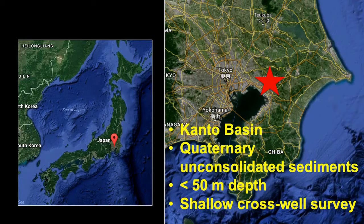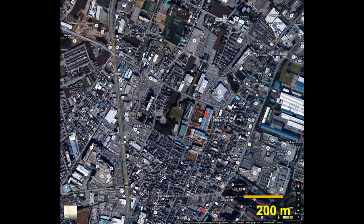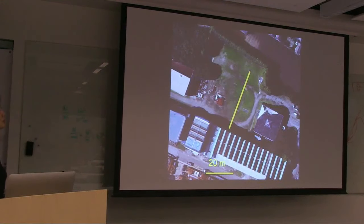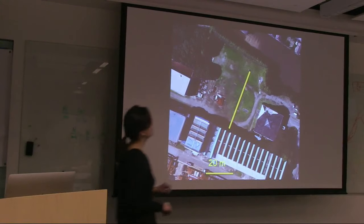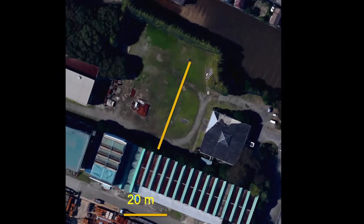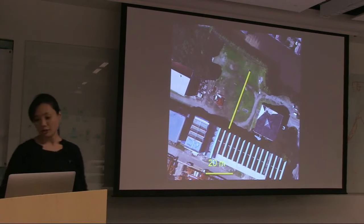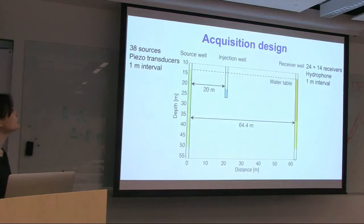The survey was done in Japan, in the Kanto Basin near Tokyo, as shown earlier. We're only looking at 50-meter depths using a shallow crosswell survey. The survey site is in a very densely populated area — it was done in a factory garden along an EOR test site. It's a very small-scale survey.